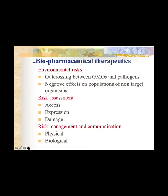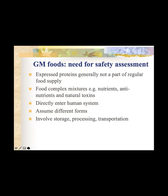Additional environmental risks include: outcrossing between GMO and a pathogen; negative effects on populations of non-target organisms; and risk of excess expression damaging the natural system by the introduced organism. GM foods need safety assessment because the expressed protein from the introduced gene is generally not part of the regular food supply, so we must check whether the gene product is harmful or allergic to humans. Food is a complex mixture of nutrients, anti-nutrients, and natural toxins — when a new gene is introduced, nutrient content, anti-nutrient content, and natural toxin production may be changed.